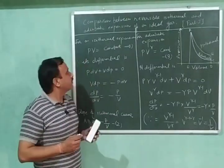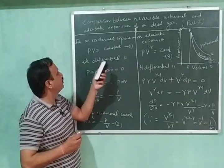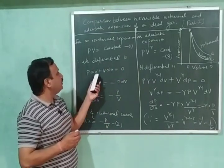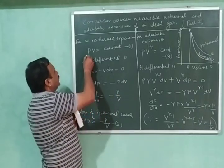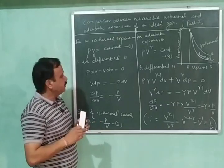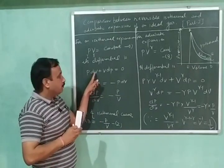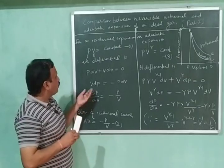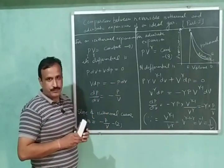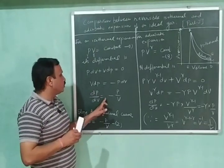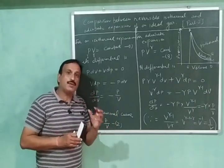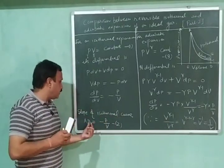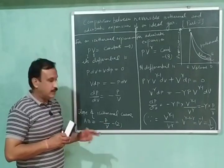In my previous video, I told you that for an isothermal expansion, we have PV is equal to constant — let this be equation number 1. Its differential will be P·dV plus V·dP is equal to 0, where P is the first function and V is the second function. From this equation we have V·dP is equal to minus P·dV, and further dP/dV is equal to minus P/V. This dP/dV gives us the slope of the isothermal curve, so the slope of isothermal curve AB equals minus P/V — let this be equation number 2.